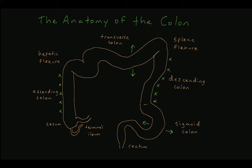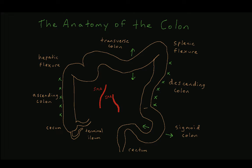Arterial blood is supplied to the colon by two midline branches off the aorta: the superior mesenteric artery, the SMA, and the inferior mesenteric artery, the IMA. In general, the venous drainage of the colon mirrors the arterial blood supply. We will not explicitly discuss the venous drainage of the colon in this video.